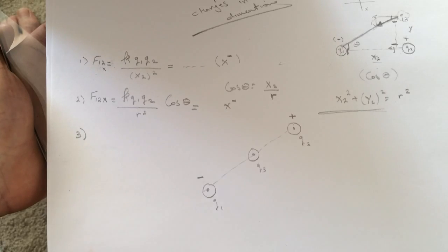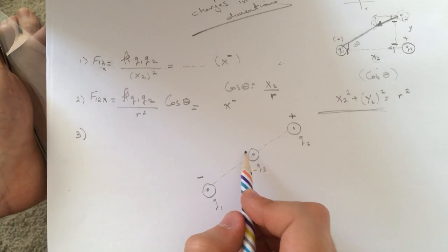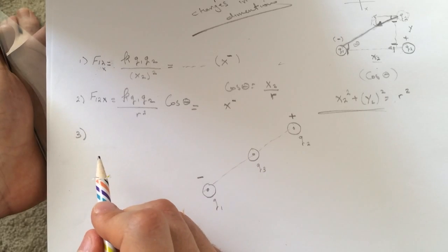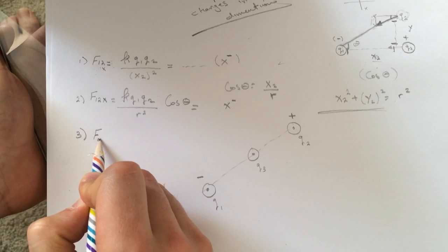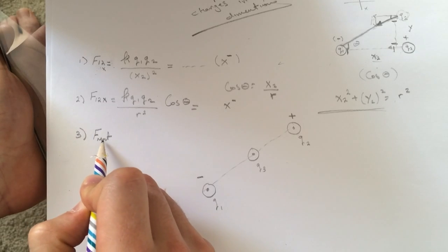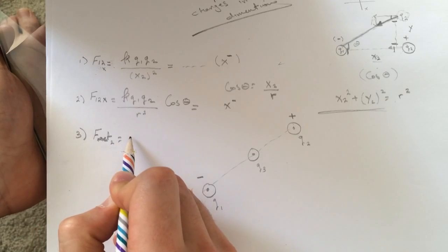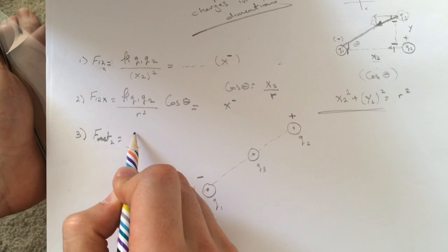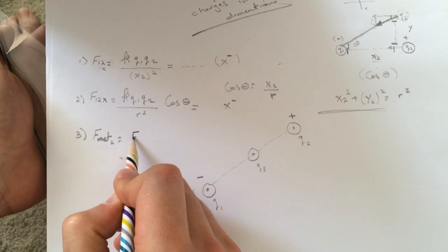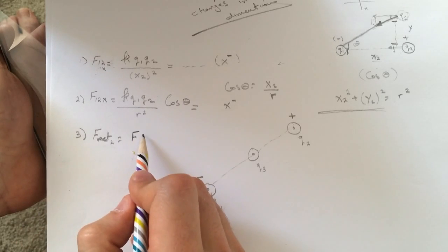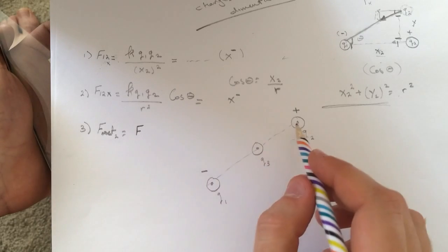So they gave us that the total force, net force on F2 on this guy. The F net. Well F net on 2 is equal to some value. And I'll call it F.